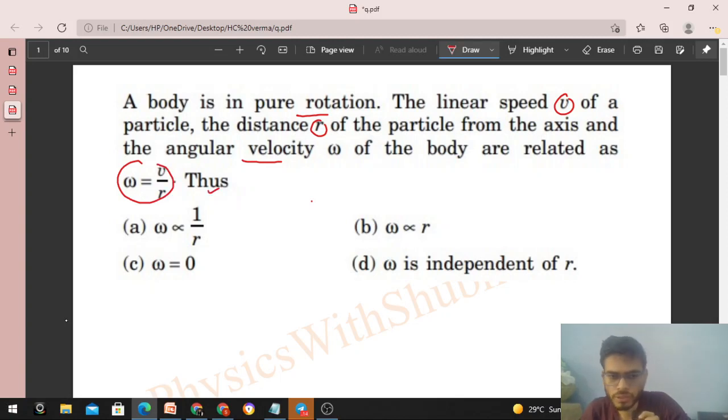So if any body is in pure rotation about any axis with some angular velocity omega, then any particle on it will move in a circular path around the axis, and for that particle the angular velocity will be the same.